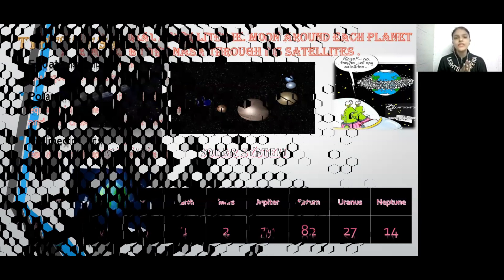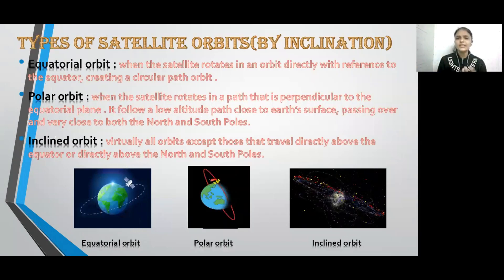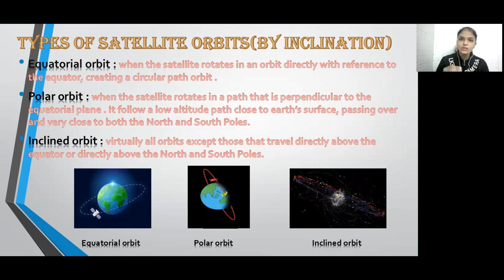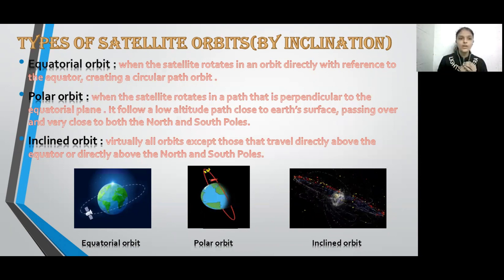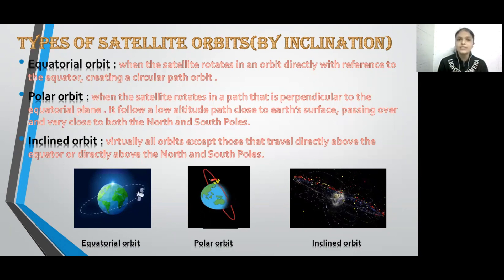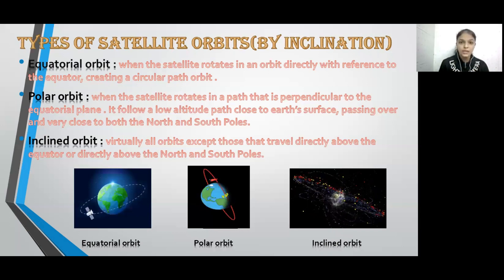The types of satellite orbits are classified according to inclination — which is the angle created by the satellite with reference to the equator. There are three types: equatorial orbit, polar orbit, and inclined orbits. In equatorial orbit, the satellite rotates directly with reference to the equator, creating a circular path at a fixed distance from the Earth. As you can see in the visual, the satellite rotates at a continuous fixed distance.